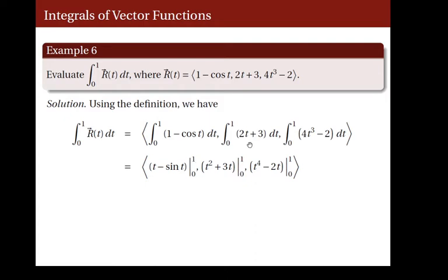For the second coordinate, we integrate 2t and we get t squared. And the integral of 3 is, of course, 3t. This function we evaluate at 0 and 1 also. Finally, for the last coordinate, we need to integrate 4t cubed, which gives t to the 4, and we integrate 2, which gives us 2t. The difference of t to the 4 and 2t we need to evaluate at 0 and 1.